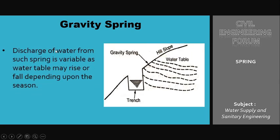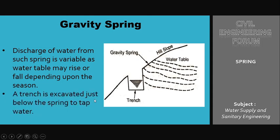The discharge of water from a gravity spring is variable, as the water table may rise or fall depending upon the season. The outflow completely depends on seasonal rainfall. To tap this water, a trench is excavated just below the spring. Here I have shown a trench excavated to accumulate the water whenever it comes out of this boundary.